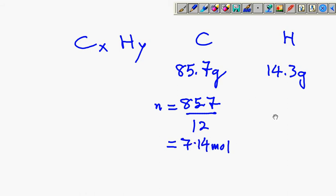On the other hand, the number of moles for hydrogen is very straightforward because you divide by 1, so you still get 14.3 moles.